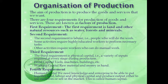The first requirement is land and other natural resources such as water, forest and minerals. The second requirement is labour — that is, people who will do the work. Some activities require highly educated workers to perform necessary tasks; other activities require workers who can do manual work. The third requirement is physical capital — that is, variety of inputs required at every stage during production. Fixed capital includes tools, machines, buildings, etc. Working capital includes raw material and money in hand.